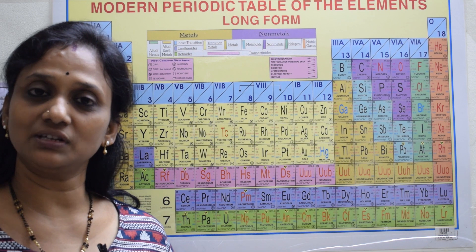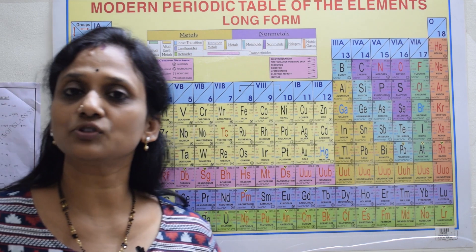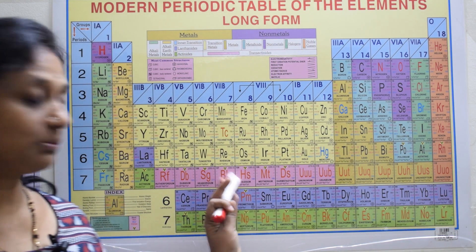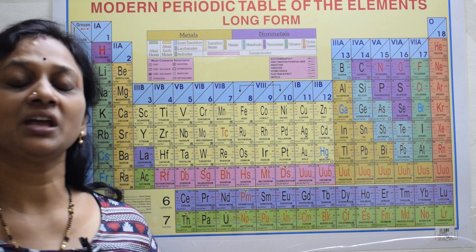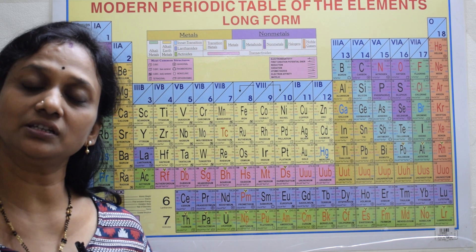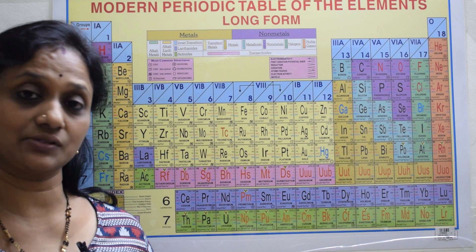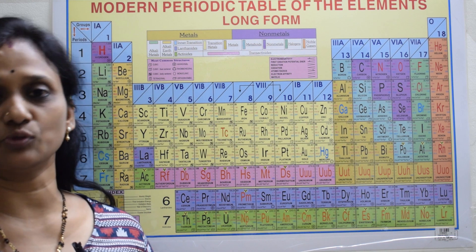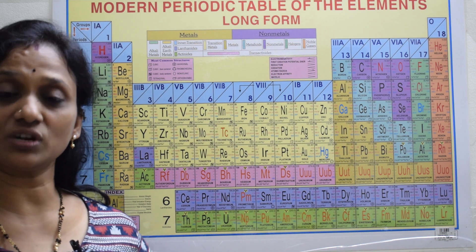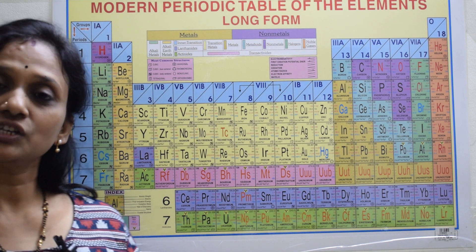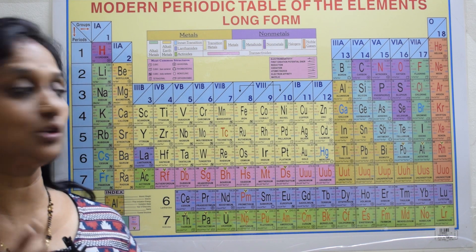The modern periodic table was given by Henry Moseley after Mendeleev's table, which we have already seen in the last video. Whenever you are learning about a periodic table, remember: first mention the year, then mention the discoverer, and then give the definition.